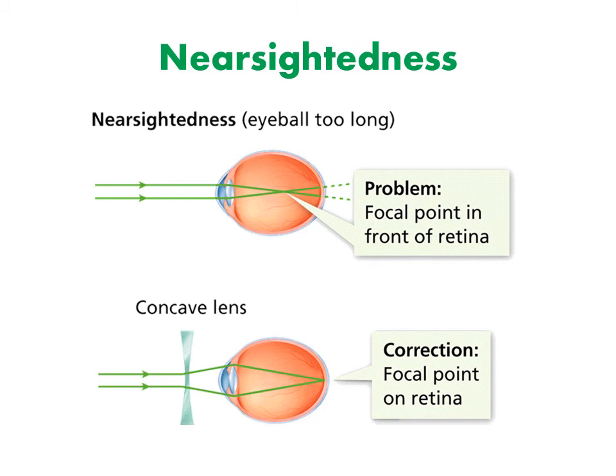Nearsightedness: a nearsighted person can see nearby things clearly, but objects at a distance are blurred. The eyeball is too long, so the lens focuses the image in front of the retina. To correct this, a concave lens placed in front of the eye spreads out light rays before they enter the eye. As a result, the image forms on the retina.